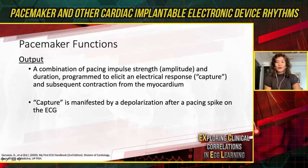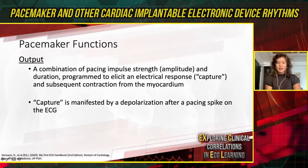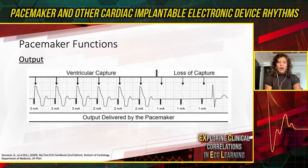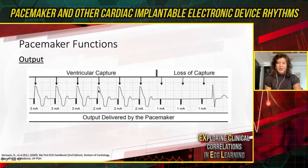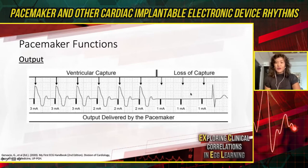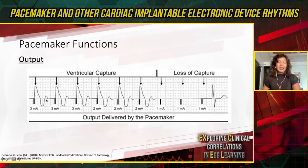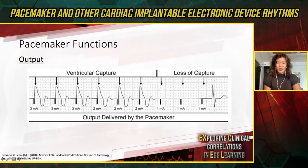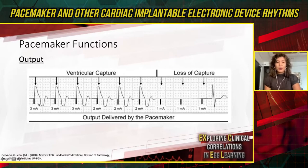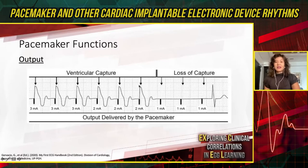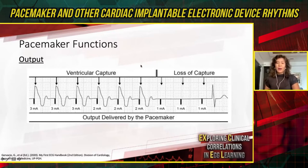On the ECG, capture is identified when a pacing spike is followed by a depolarization electrogram — either a P wave or a QRS. In this example, you can see ventricular capture on the left side of the screen, represented by pacing spikes followed by QRS complexes. Towards the right side, there is loss of capture, with pacing spikes no longer followed by QRS complexes. This is from a threshold testing strip — we progressively decrease the output, and the last captured value is the pacing threshold. When setting the output, we multiply the pacing threshold by two to allow an adequate safety margin.